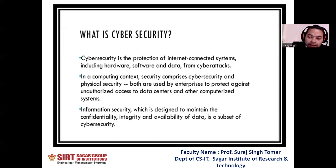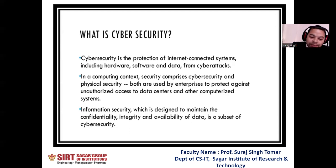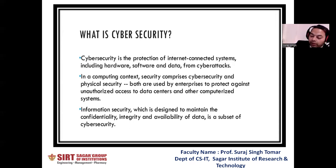Both are used by enterprises to protect against unauthorized access to data centers and other computerized systems. Information security, which is designed to maintain the confidentiality, integrity, and availability of data, is a subset of cyber security. The main three things are called CIA — confidentiality, integrity, and availability. We will see this in the next slide.